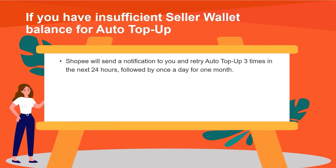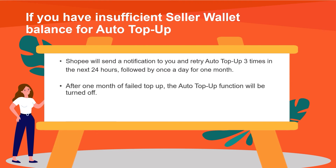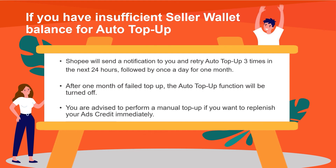If you have insufficient seller wallet balance for Auto Top Up, Shopee will send a notification to you and retry Auto Top Up three times in the next 24 hours, followed by once a day for one month. After one month of failed Top Up, the Auto Top Up function will be automatically turned off.